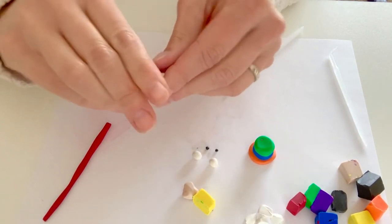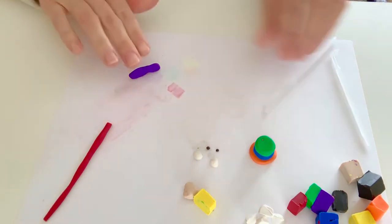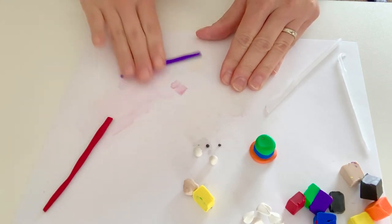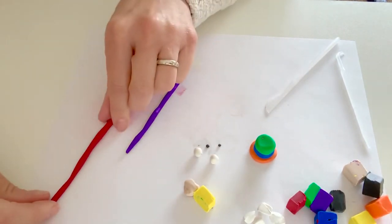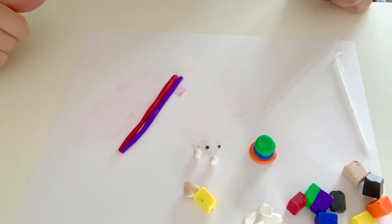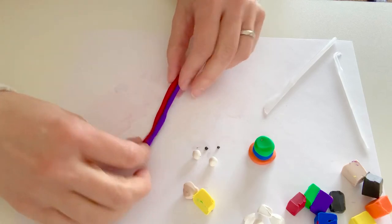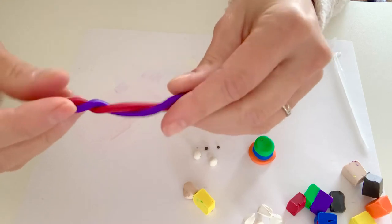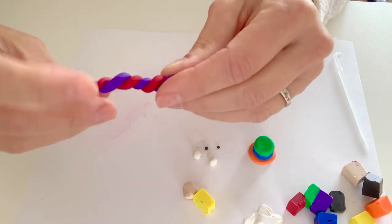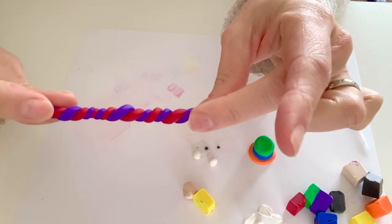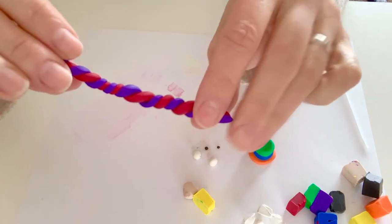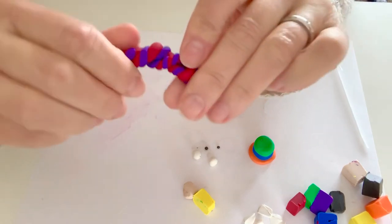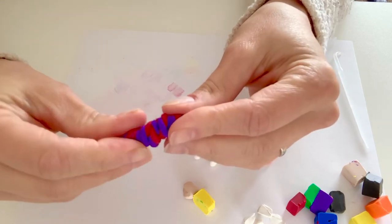Same thing with the purple. Roll it into a snake. I want them to be approximately the same length. So there they are. I'm going to put them side-by-side, press them together a little bit and then twist them. So twist them up good, just like that. And I'm going to take it and fold it in half, like so, and twist it again.